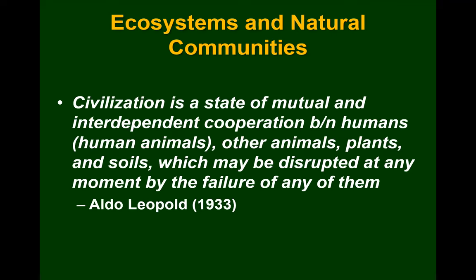Let's start with a quote from Aldo Leopold: 'Civilization is a state of mutual and interdependent cooperation between humans — i.e., human animals, other animals, plants, soils — which may be disrupted at any moment by the failure of any one of them.' In other words, we're all connected — the plants, the animals, the soil, the humans — and a disruption of any one of those things could cause a major collapse of the ecosystem.